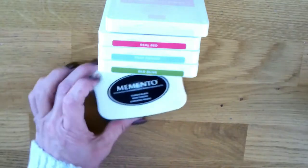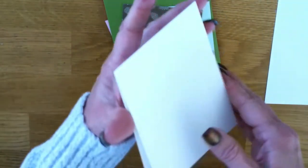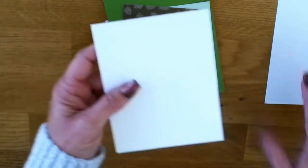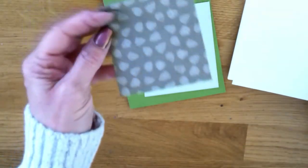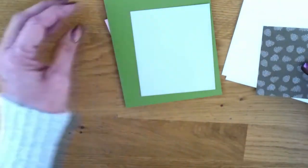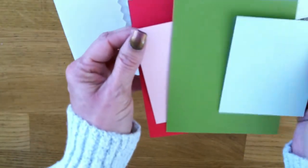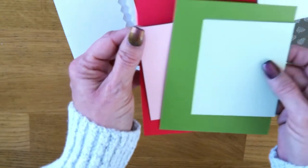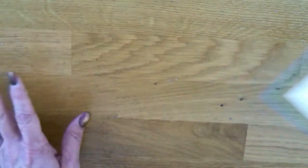Stamp pads are going to be Real Red and Old Olive. We have a top folding A2 card, thick Whisper White, which is 4 1/4 by 5 1/2. I do wish I used a different color card base, but it still works out.